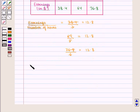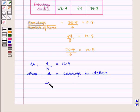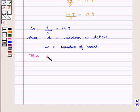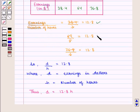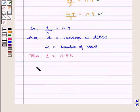So, we have E upon H is equal to 12.8, where E is the Earnings in Dollars and H is the number of hours. And thus we get E is equal to 12.8 into H. Since each ratio is same, the two quantities are proportional.